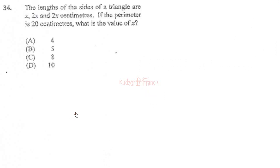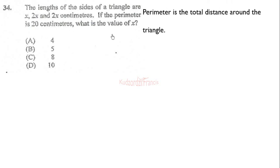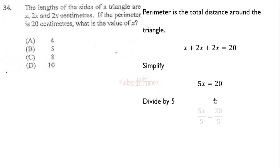Item 34: the lengths of the sides of a triangle are x, 2x, and 2x centimeters. If the perimeter is 20 centimeters, what is the value of x? The perimeter is the sum of all sides, so x plus 2x plus 2x equals 20. That gives 5x equals 20, and dividing both sides by 5 gives x equals 4 centimeters. The correct answer is A.